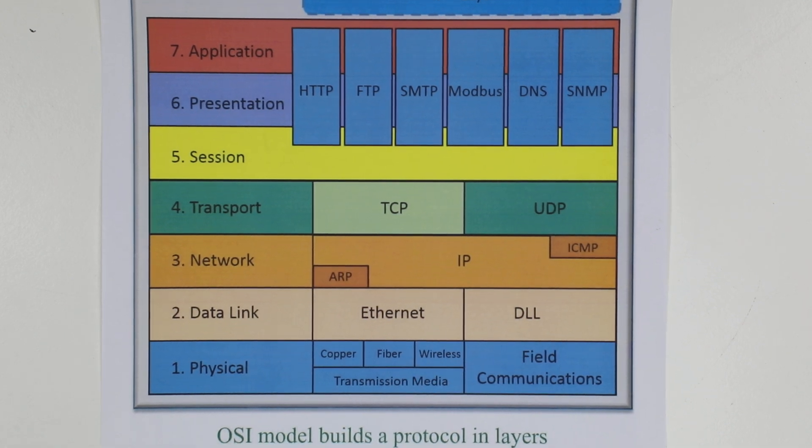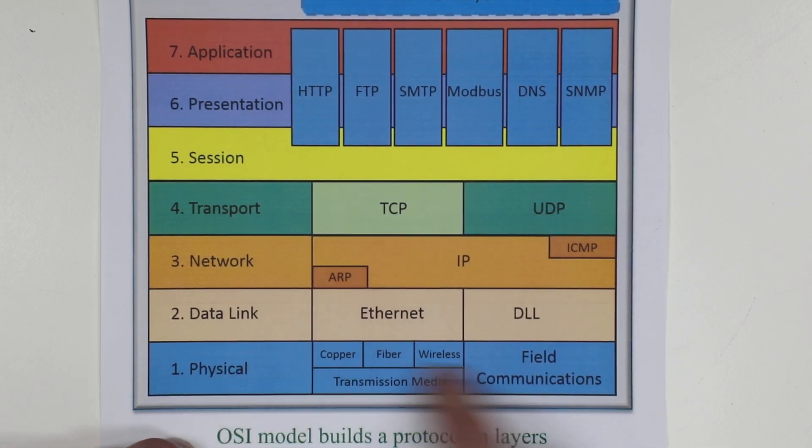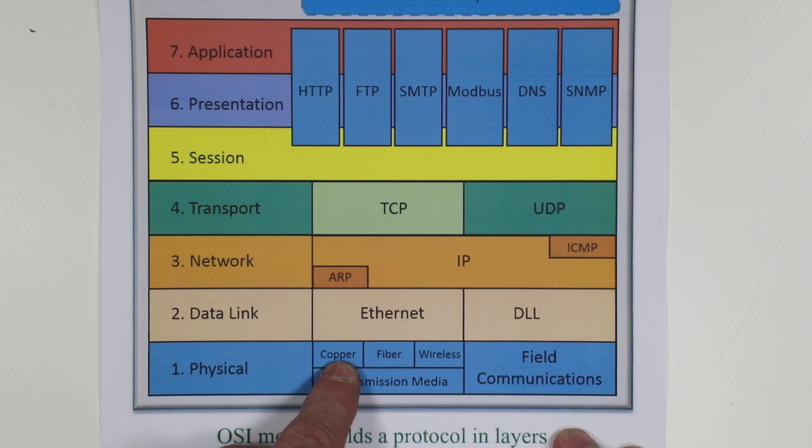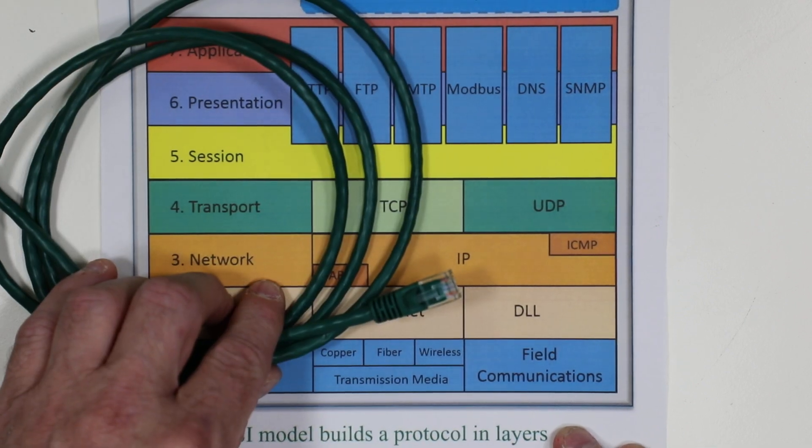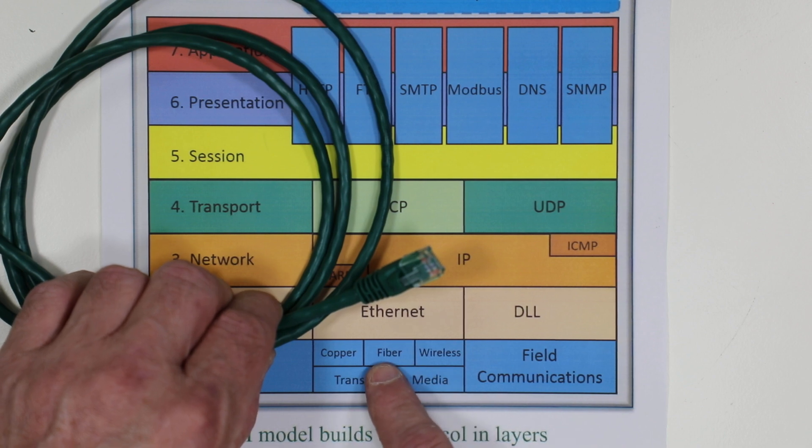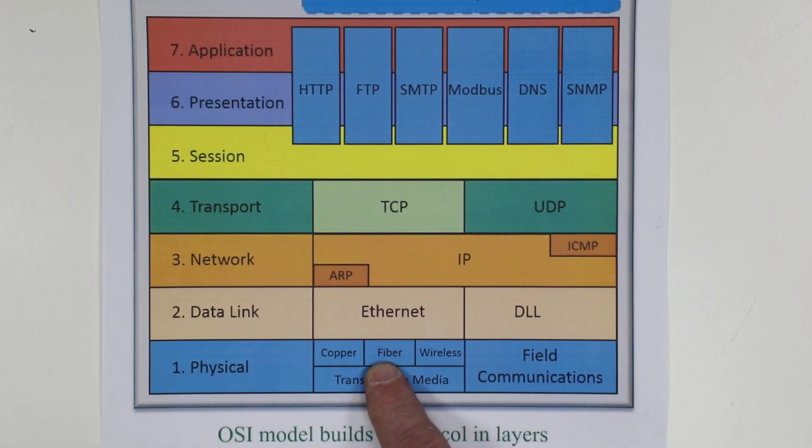This video builds on our prior video talking about the physical layer of data transfer in holiday lighting controllers. Now, we talked about the physical layer, copper wire, in particular, CAT5 cable, and we also talk about wireless.